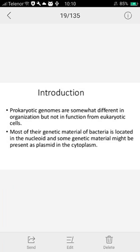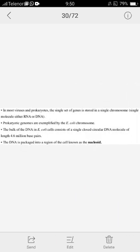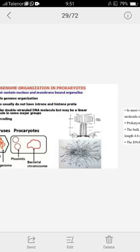A proportion of the genetic material can be present as a plasmid in the cytoplasm. Plasmid is an extra-chromosomal DNA. In most viruses and prokaryotes, the single set of genes is stored in a single chromosome. Many chromosomes can be present in a single circular form in prokaryotes. There are 4.6 million base pairs, and this DNA is packaged into a nucleoid region.